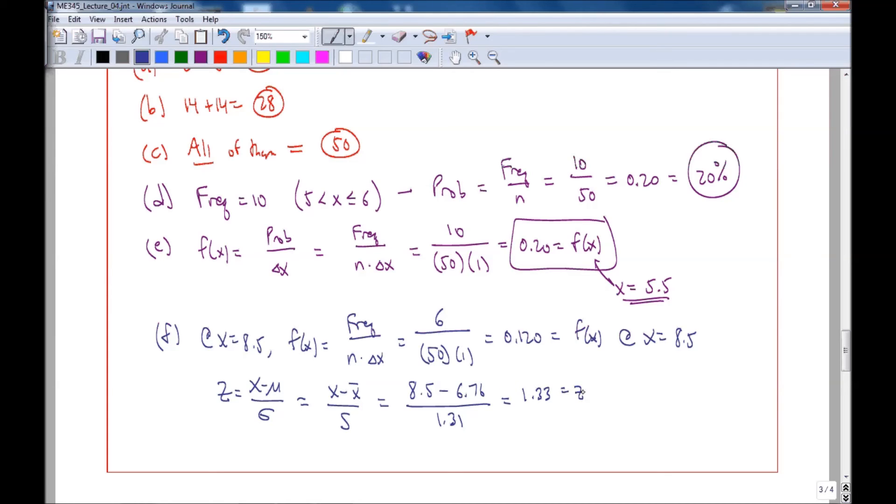And then finally, f(z) is equal to sigma times f(x), which is approximately s times f(x) since we don't know sigma, we know s. So this would be 1.31 times 0.120, and that gives us 0.1572, which I would approximate to three digits: f(z) is 0.157.